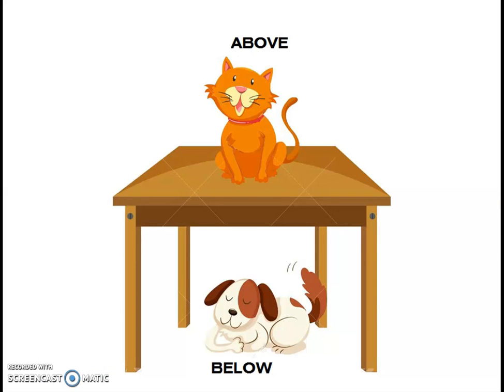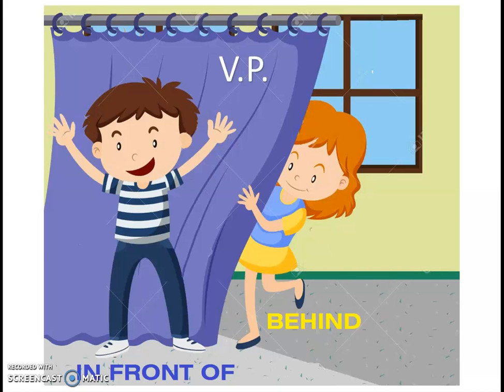Now, we will move on to the shortcut method. So, from this diagram, we can understand that we need a horizontal plane to locate or to represent the above position or below position. From this diagram, what we can understand is we need a vertical plane to locate or to represent the in front of position or behind position.